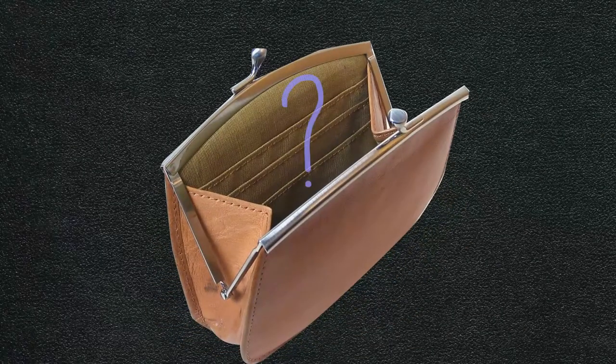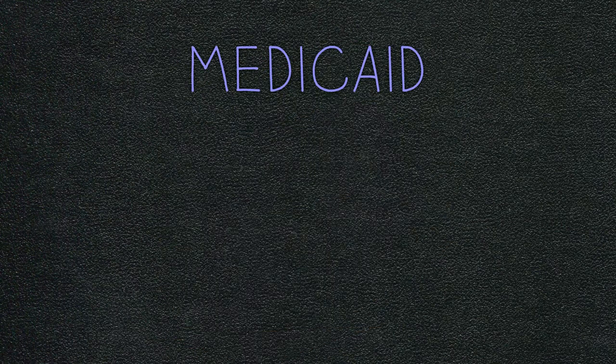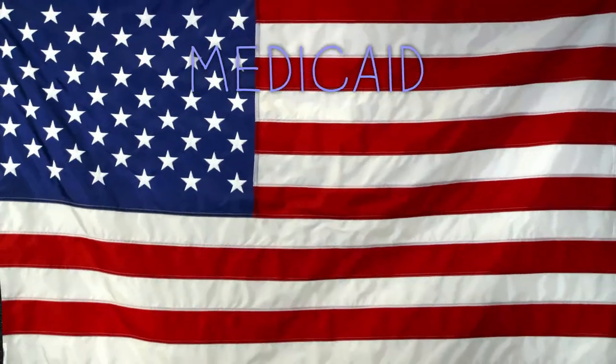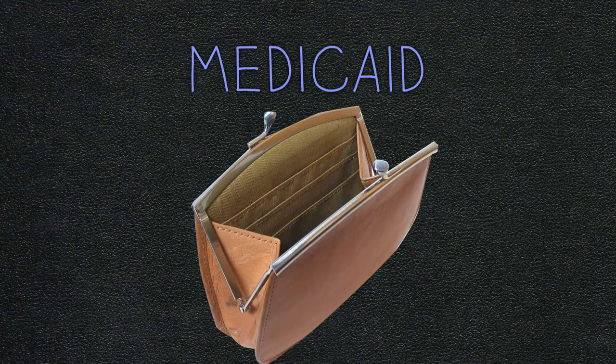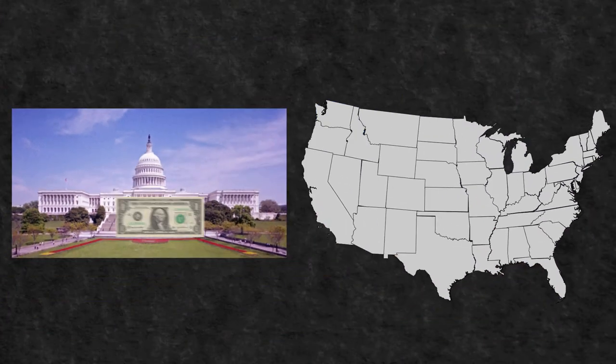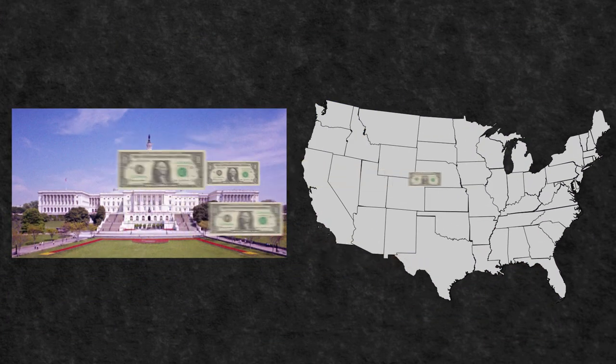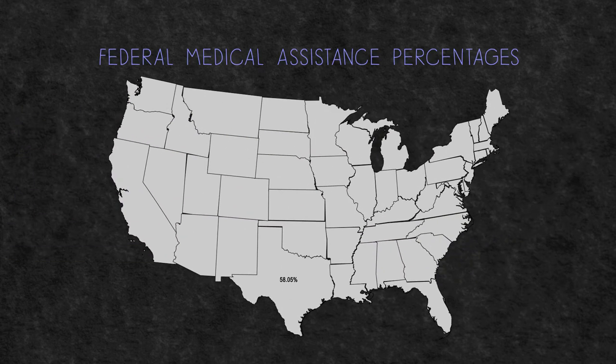So, what if you're unable to pay these premiums or deductibles? That's where Medicaid comes in. Medicaid is a government insurance program for people of all ages whose income and resources are insufficient to pay for healthcare. Funding is jointly provided by the federal government and states, which supply up to half of the funding for Medicaid. The federal government pays states for a specified percentage of expenditures called FMAP. FMAP varies by state based on criteria such as per capita income.